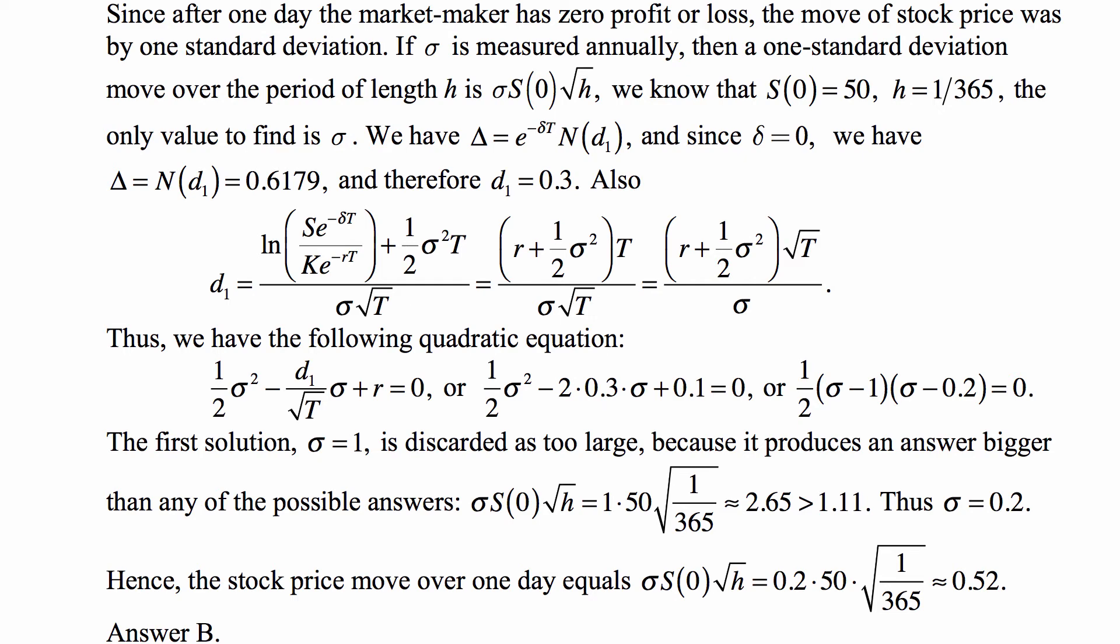And in this case, that just ends up being, the option is at the money, so K is equal to S, and delta, the dividend yield is zero. So this just ends up being (r + 1/2 σ²)t over σ√t.